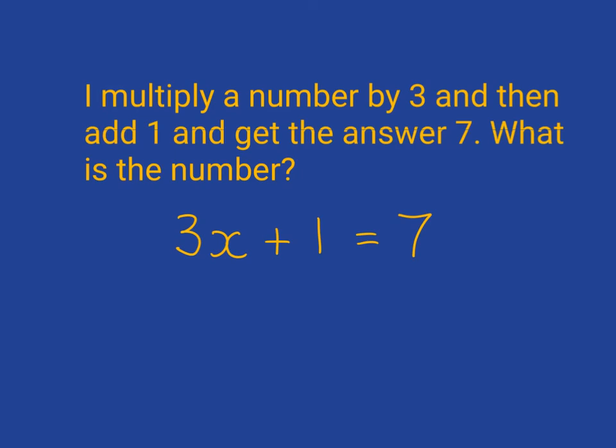Can you think what the number might be? What number when multiplied by 3 and then you add 1 to it gives you the answer 7? Hopefully you can figure that out in your head that the answer has to be 2, because 3 times 2 is 6 plus 1 gives you the 7.